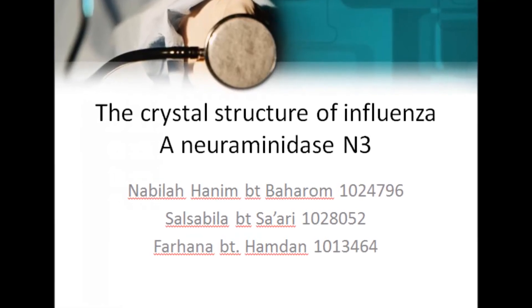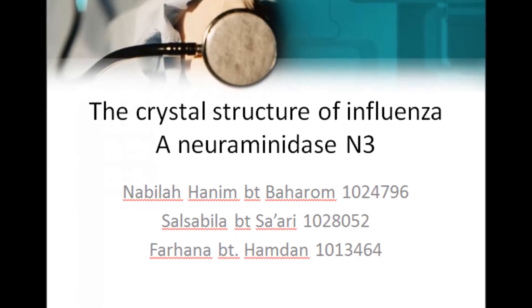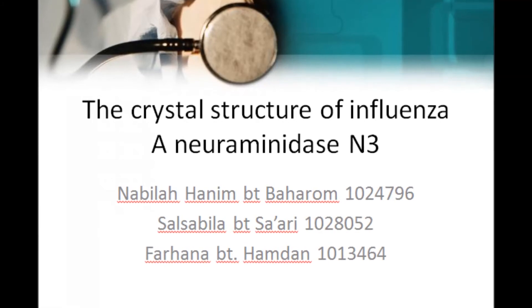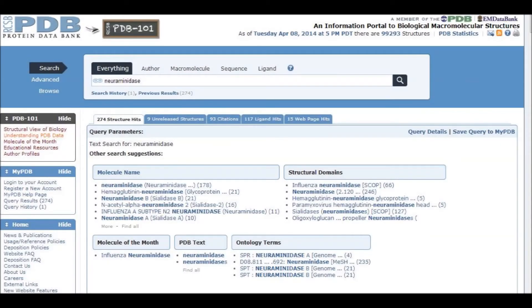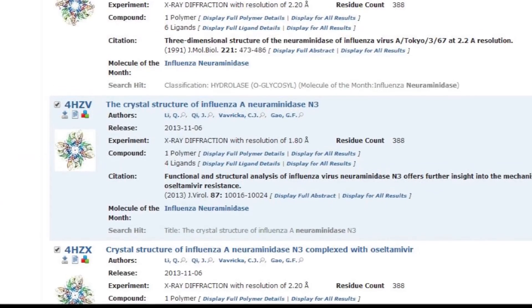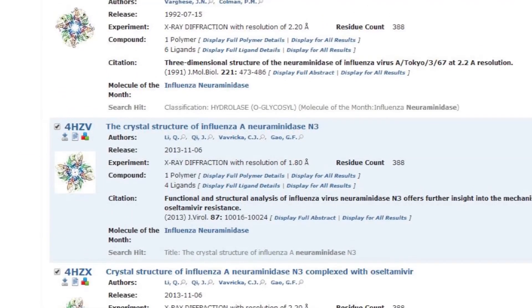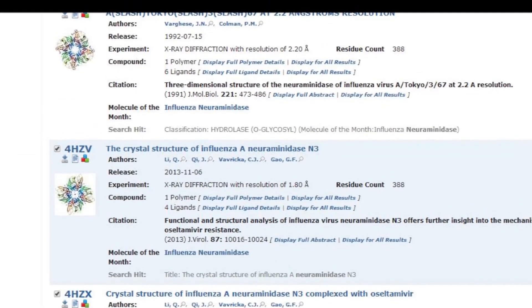Here is an example of neuraminidase, a crystal structure of influenza A neuraminidase N3. First and foremost, where can we get the information? Well, information on neuraminidase can be found under the protein data bank website. There are hundreds of neuraminidase that can be found in this website.